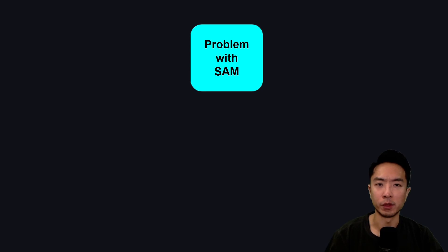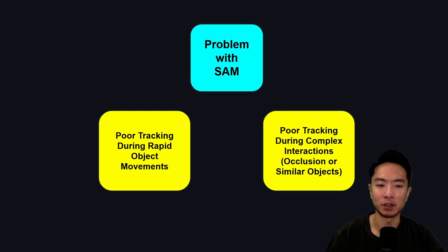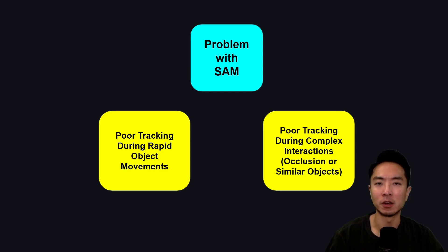For those that have been following the Meta SAM model, you'll know that there are some issues with it. One issue is poor tracking during rapid object movements, and another is poor tracking when there are complex interactions such as occlusion or similar-looking objects.